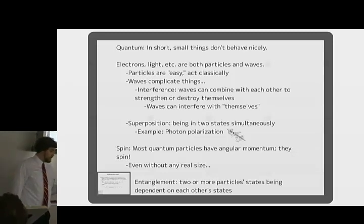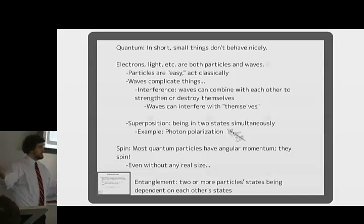Another important thing that's important to quantum computing is spin. Quantum particles actually spin. They have angular momentum. We've seen that, though sometimes they don't actually have any real size, which gets kind of strange. But they do spin, and they can spin in any direction, and that's also in superposition, typically. And the last one is entanglement, and you can make two or more particle states dependent on the other one's state. And so you can measure one and know information immediately about the other one.